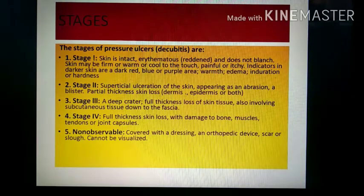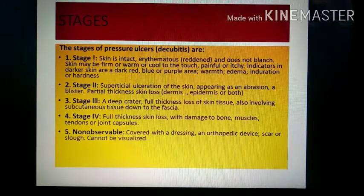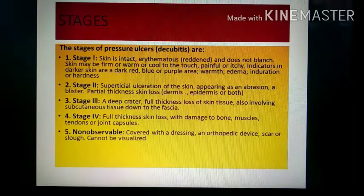Stage 2 is superficial ulceration of the skin, mainly involving the dermis and epidermis — either one or both layers. It appears as an abrasion, which is damage to the surface caused by rubbing something very hard against the skin. A blister is a fluid-filled sac which is painful and present on the skin. There is partial thickness skin loss involving the dermis and epidermis.